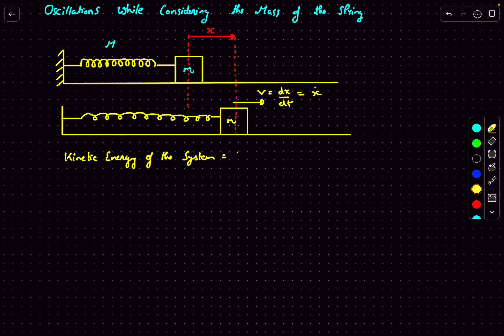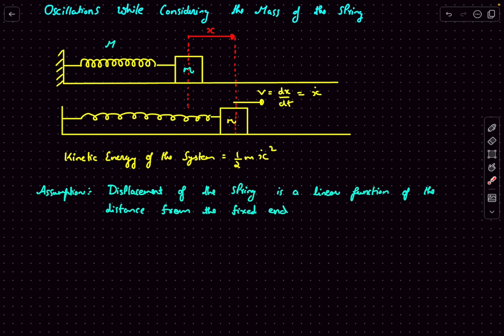Let's determine the kinetic energy of the system. The kinetic energy of mass m is fairly simple — it's ½mẋ². Now the tough nut to crack is the kinetic energy due to the spring. At this particular point we have to make an assumption: the displacement of the spring is a linear function of the distance from the fixed end.